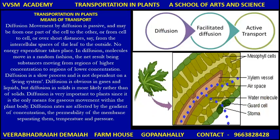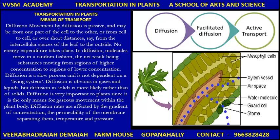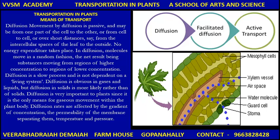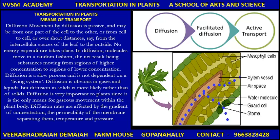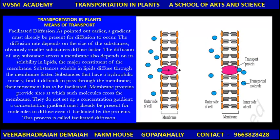Means of transport — diffusion is very important here. The diffusion of molecules through xylem and phloem. Stomata — the stomata in the leaf, the pore in the leaf. Facilitated diffusion: as pointed out earlier, a gradient must already be present for diffusion to occur.